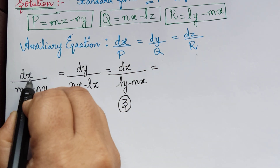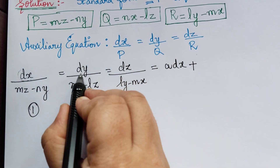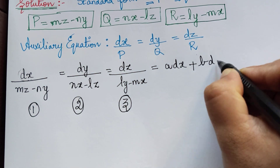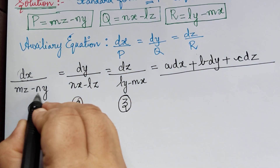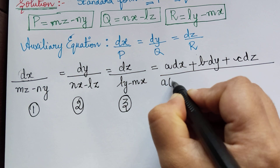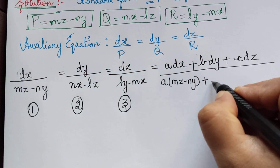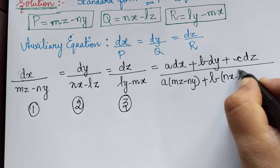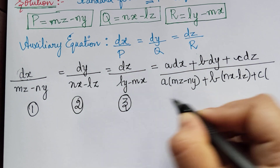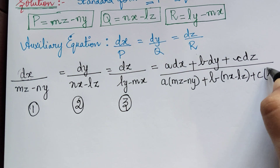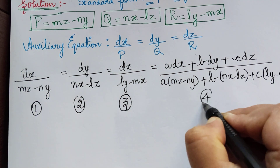So the fourth ratio is formed by: numerator is a·dx plus b·dy plus c·dz, and the denominator is a(mz minus ny) plus b(nx minus lz) plus c(ly minus mx). This is the fourth ratio that we have formed.